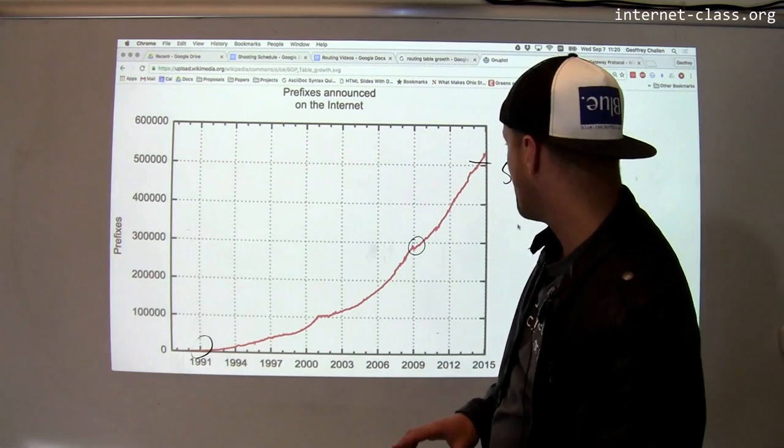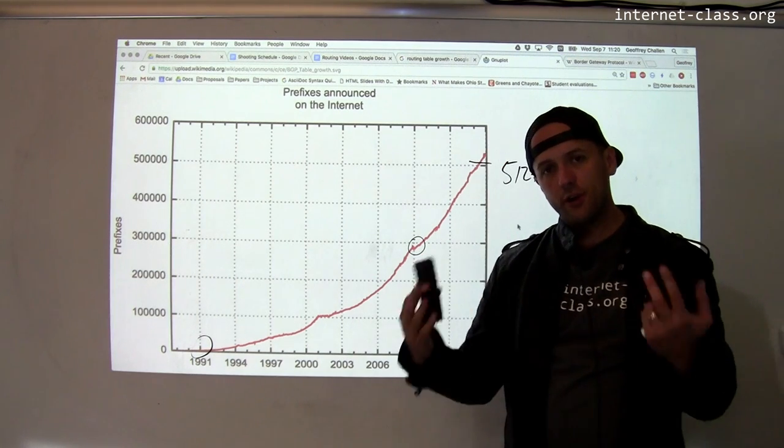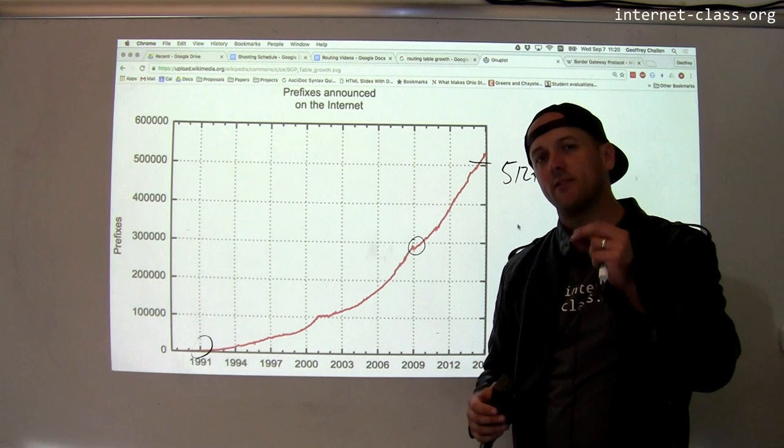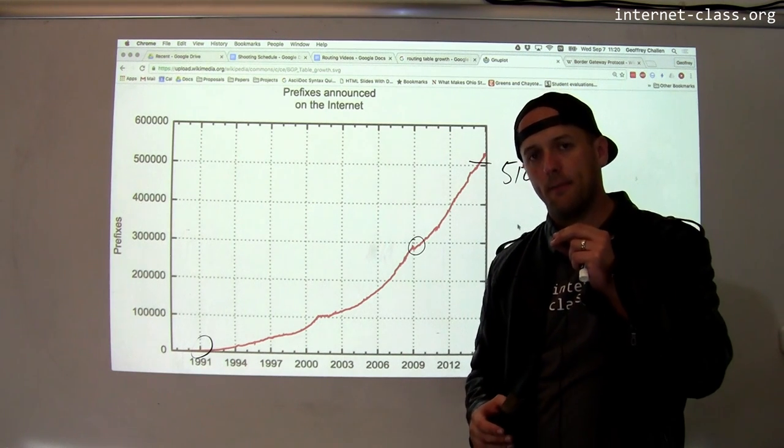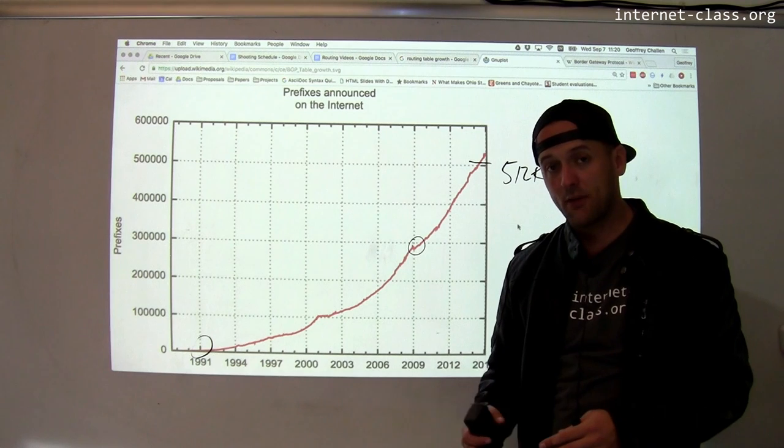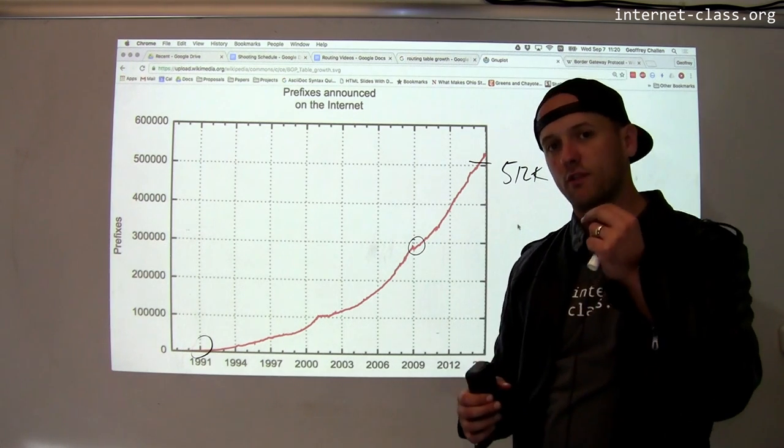So what happened when that happened? Well, at that point, the router could no longer fit its routing table into this special piece of really high speed hardware that it uses to make routing decisions. And instead, it started to make routing decisions much more slowly.